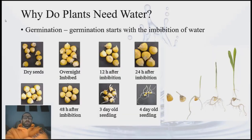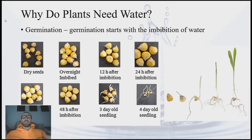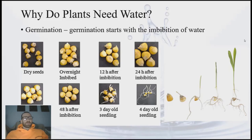As we've talked about already, there are a number of processes that occur in our plants that require water. The first we can look at is germination. When we were looking at seeds, the first stage of germination is that imbibition of water. Our seeds are taking in water and when that happens, it kicks off all these metabolic processes that then start happening, ultimately leading to germination — the emergence of the radical and ultimately the emergence of the seedling.